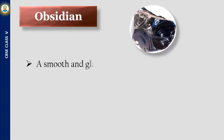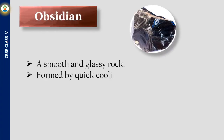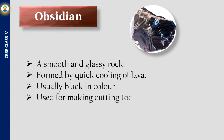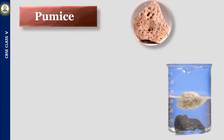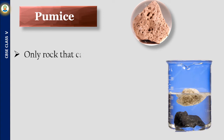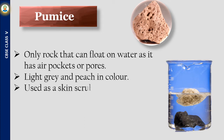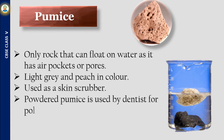Obsidian is a smooth and glassy rock formed by quick cooling of lava, usually black in color, used for making cutting tools and ornaments. Pumice is the only rock that can float on water, as it has air pockets or pores. It is light gray and peach in color, used as a skin scrubber. Powdered pumice is used by dentists for polishing teeth and is also used in making lightweight concrete blocks.